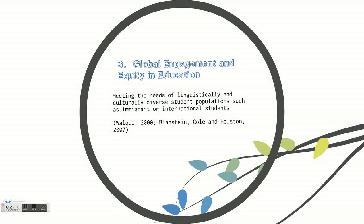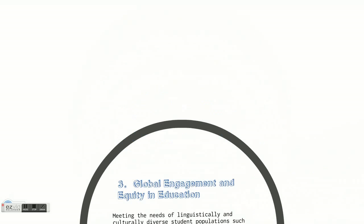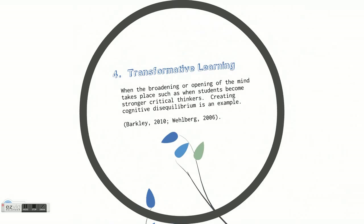But maybe that's not large enough either. Maybe we need to go to a bigger scale, such as global engagement or international engagement. Equity in education: in this context, engagement is meeting the needs of linguistically and culturally diverse student populations, such as immigrant or international students. Then again, maybe it has nothing to do with the size of the groups we're discussing. Maybe instead it has to do with what happens to the individual learner. So in this context, let's consider engagement as transformative learning — when the broadening or opening of the mind takes place, such as when students become stronger critical thinkers than they were before taking the class. Creating cognitive disequilibrium is an example of using transformative learning.